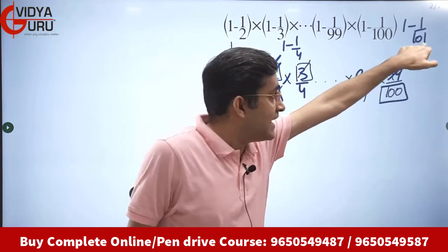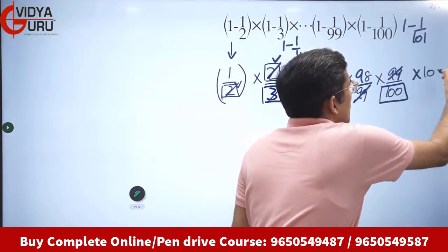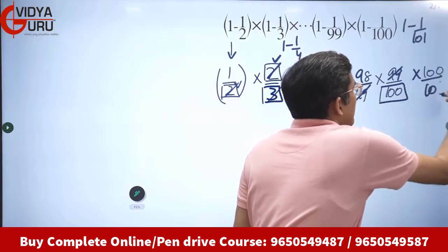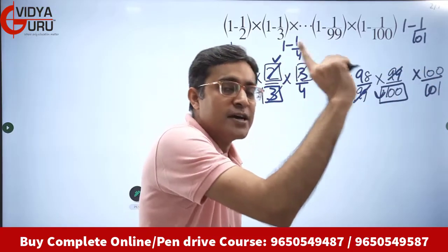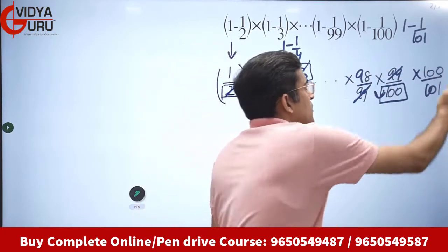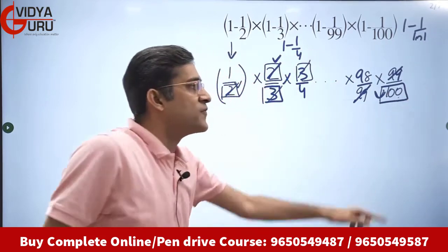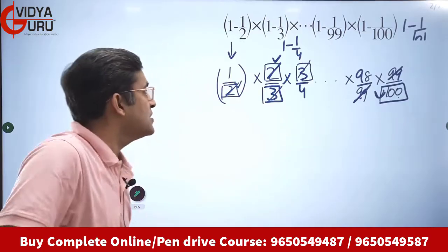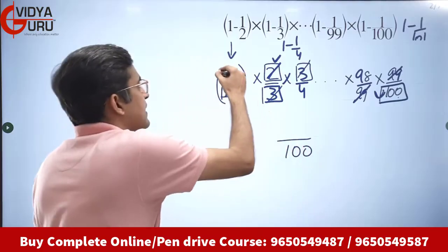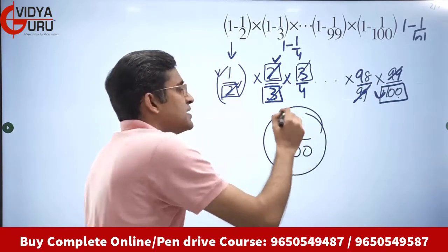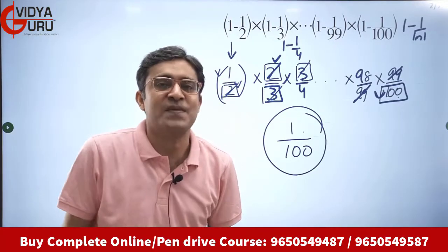If we had the next term (1 − 1/101), then this 100 would have got cancelled out. But we don't have that term, so 100 remains in the denominator, and 1 remains in the numerator. The answer is 1/100. Isn't it smart?